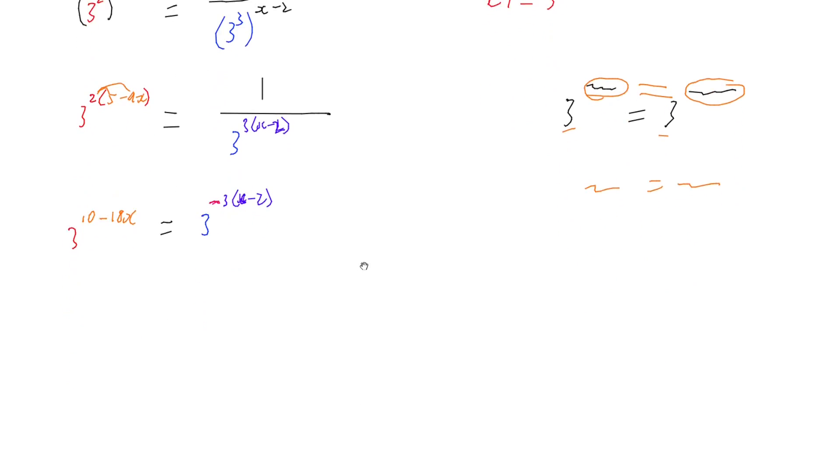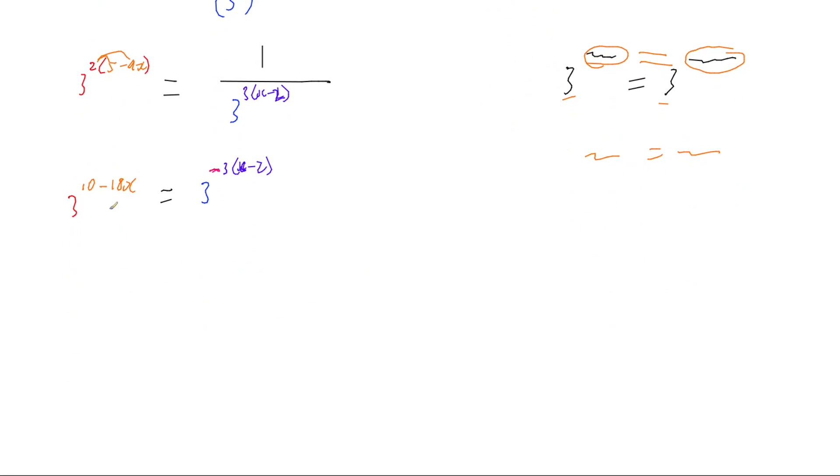So if I go and do that with my question here, I've got 3 to the 10 minus 18x equals 3 to the negative 3 times x minus 2. All that means is that my 10 minus 18x is the same as my negative 3 times x minus 2.